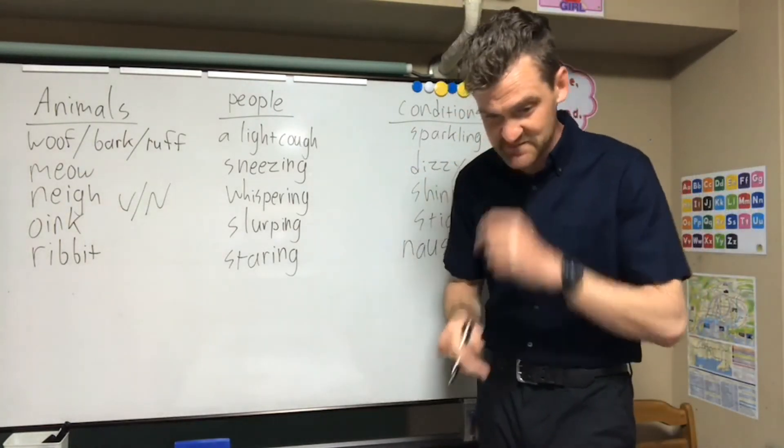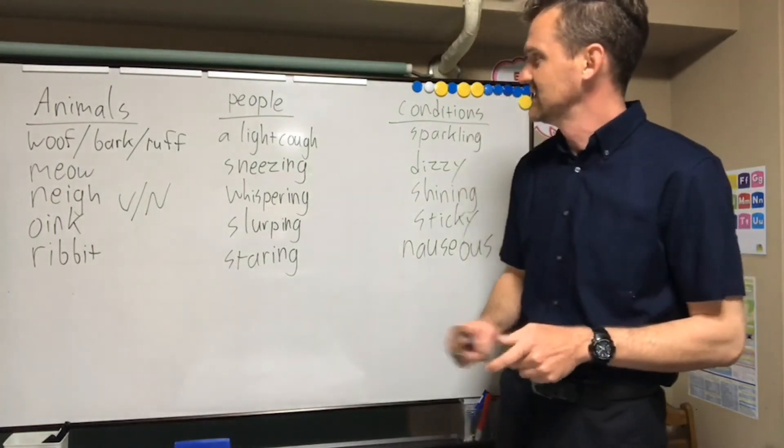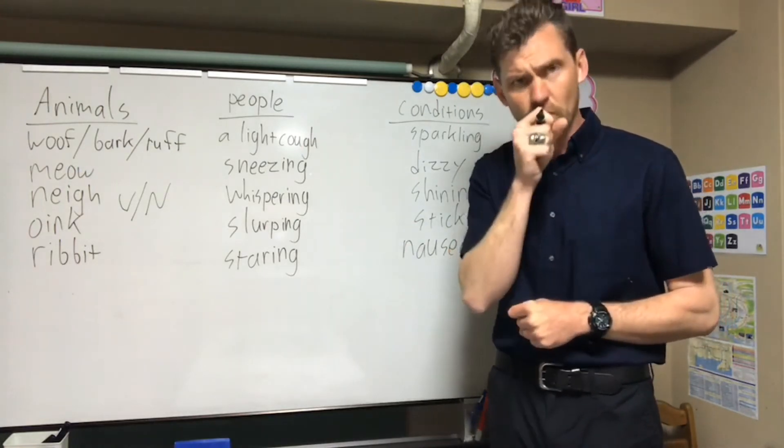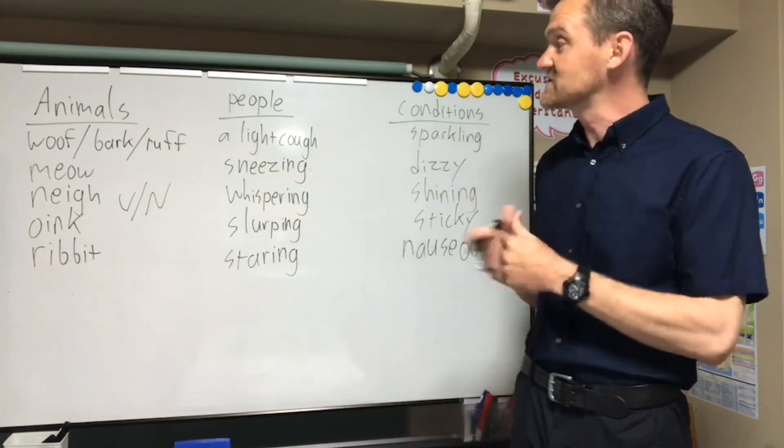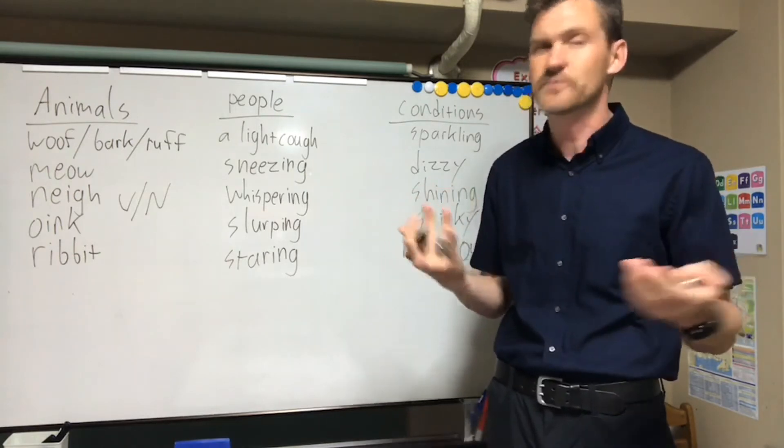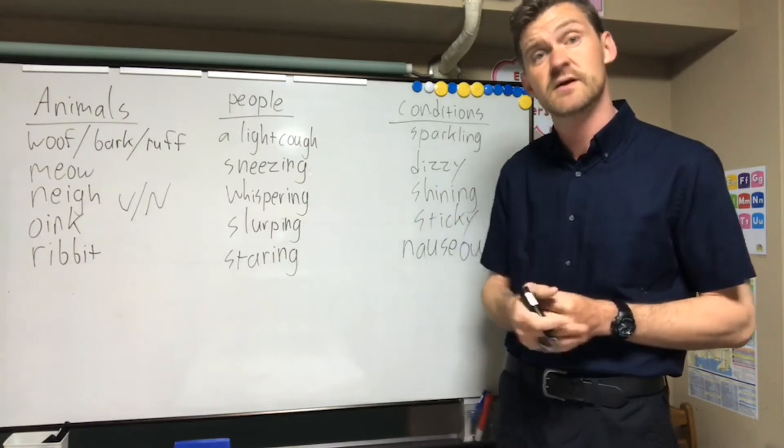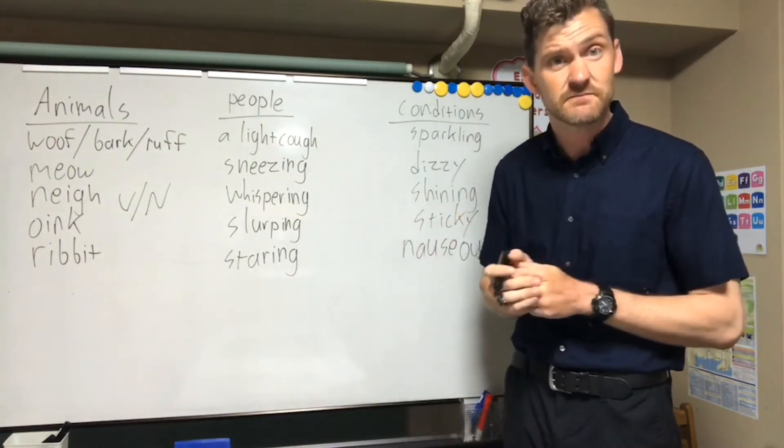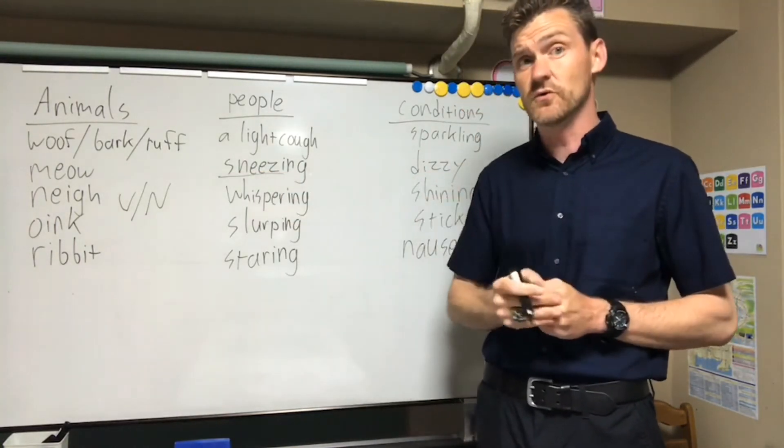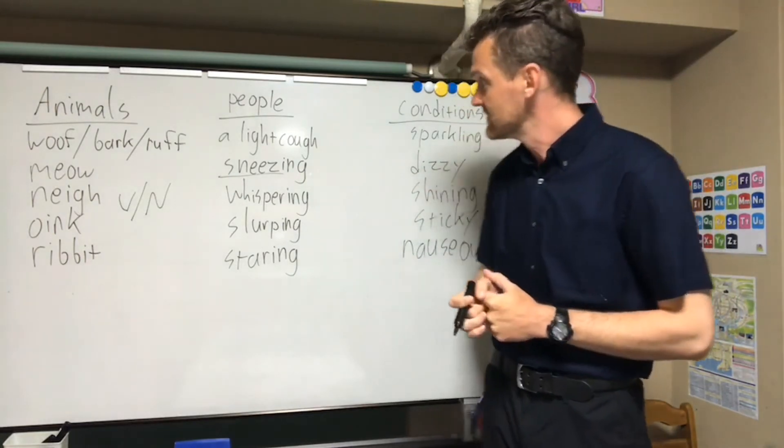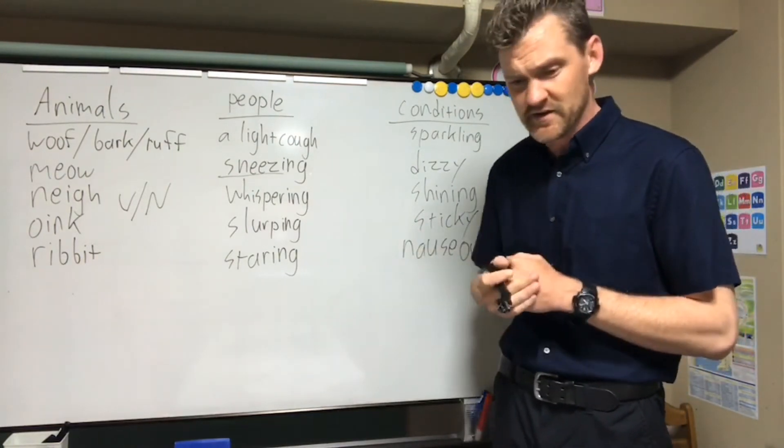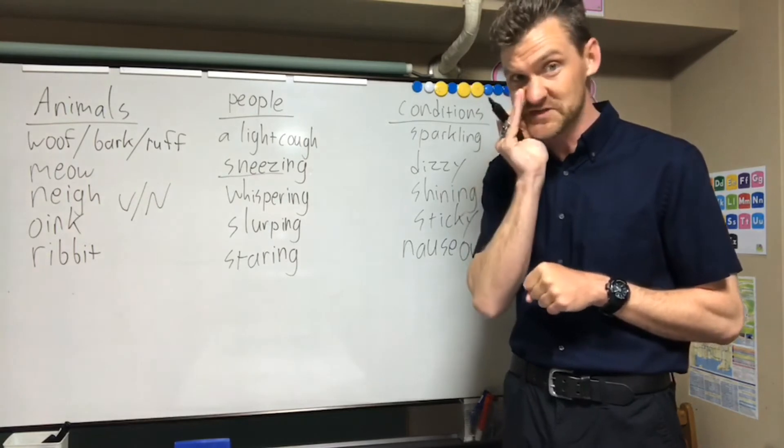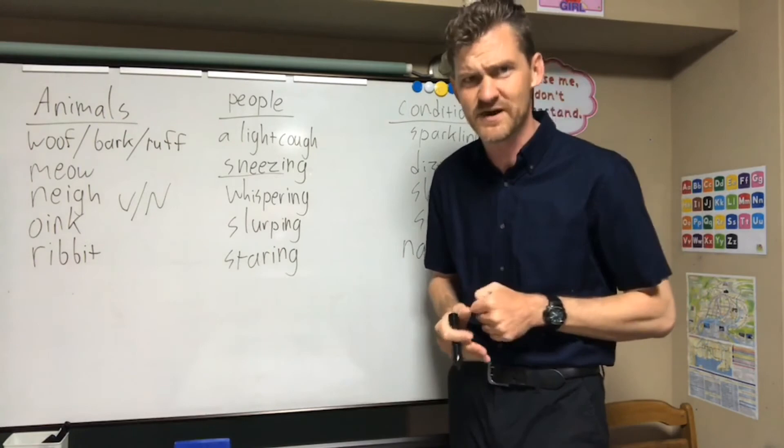Moving on to people. Some sounds that can be a little difficult in Japanese. Again, using the verb is probably best here. A light cough. Kohon kohon. A light cough. Again in English there's not really a sound for it. Just cough cough. We don't say that usually. We say he has a cough or he is coughing. Meishi, doshi. Sneezing. Kushu kushu. Sneeze. The main verb is sneeze. Meishi, doshi. He's sneezing. He has a sneeze. Whispering. They're whispering. Kosokoso. Whispering. The children are whispering to each other. Oh my gosh, Jason stays crazy. Yes he is. That's right.